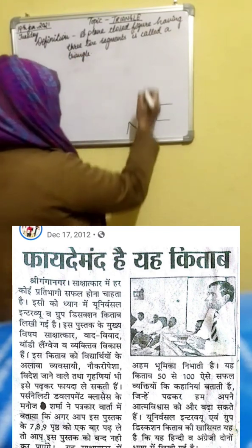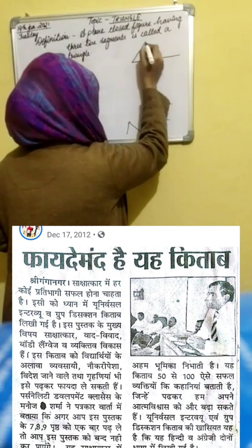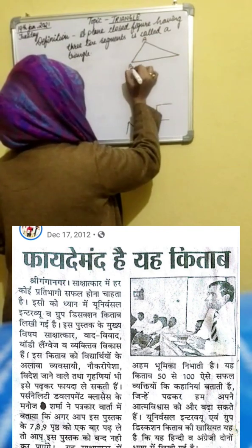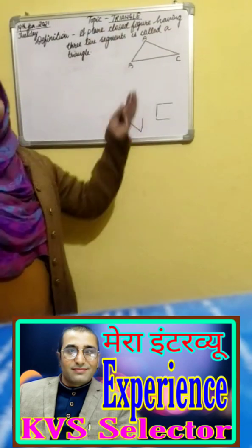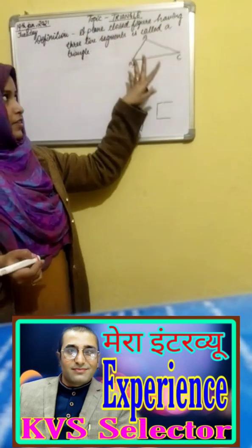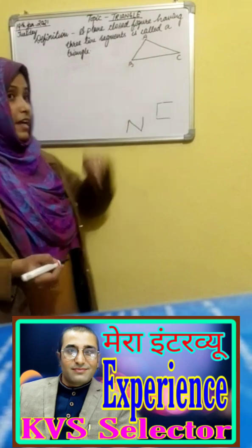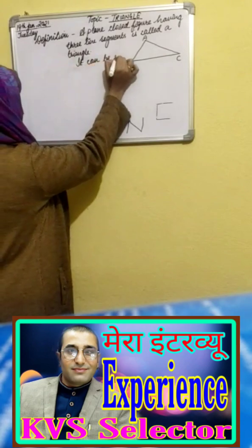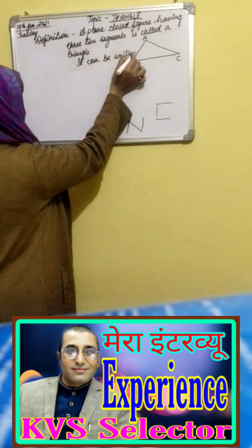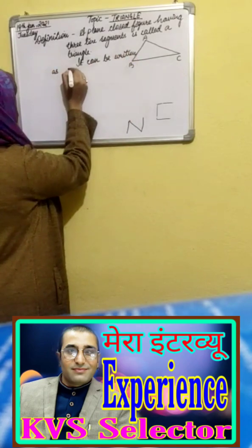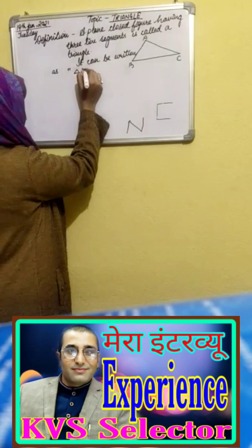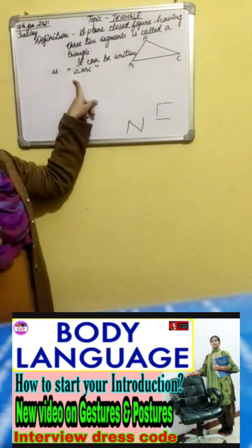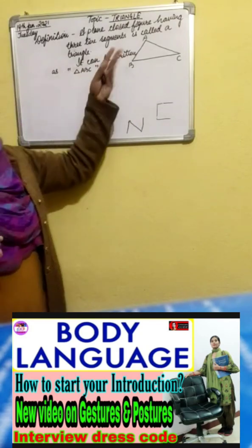Draw a small triangle on the right side of your notebook with a pencil, and name the vertices A, B, and C. This figure is closed and is formed by three lines. We can represent this triangle as triangle ABC.